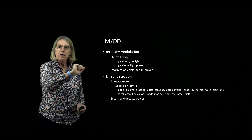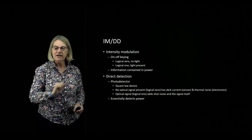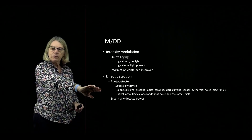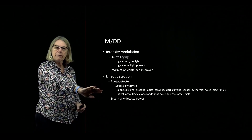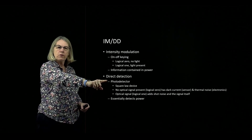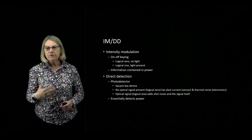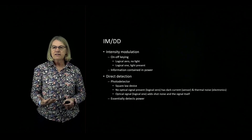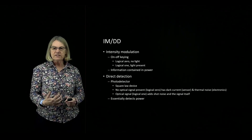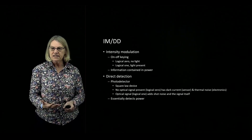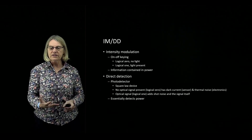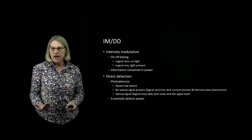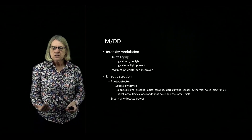Essentially the information is contained in power. No power is logical 0; power present is logical 1. At the receiver side, we do direct detection, by which we mean we employ a photodetector. The photodetector is essentially a square law device. Therefore, it responds to the square of the incident electric field, and this is essentially a power detector.